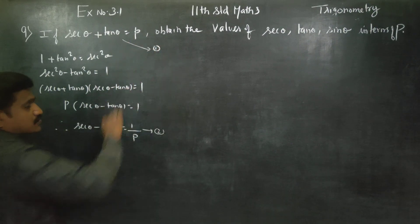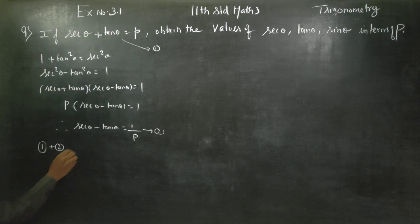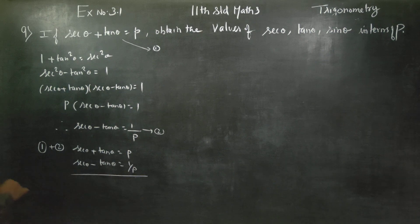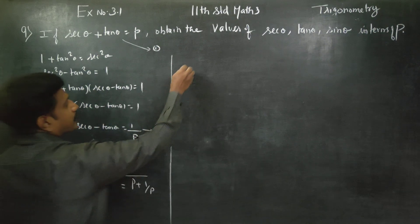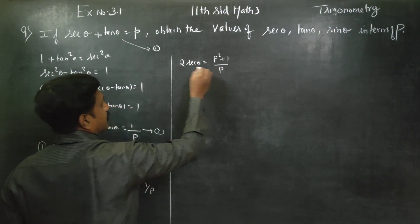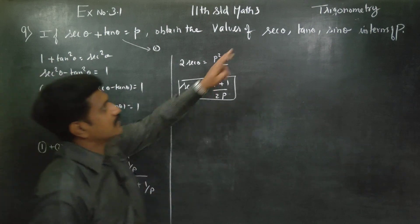Result number 1 is secant theta plus tan theta equals P. Now I am going to add both equations. Adding them: secant theta plus secant theta gives 2 secant theta. On the right side, P plus 1 by P. Taking LCM and cross multiplying, 2 secant theta is equal to P squared plus 1 by P. So secant theta is equal to P squared plus 1 by 2P. I have found secant theta in terms of P.